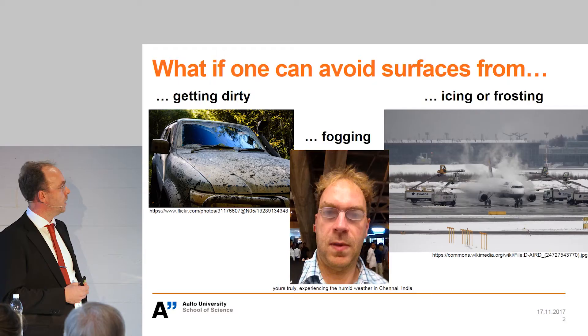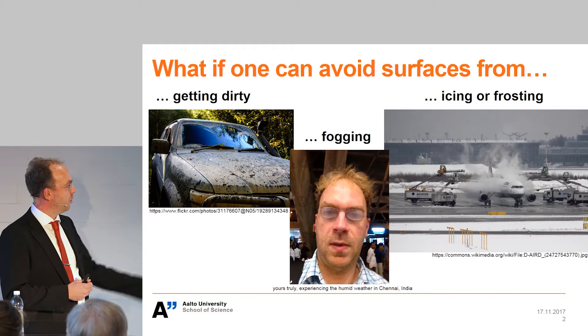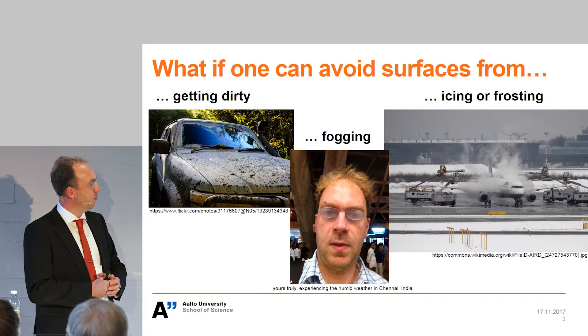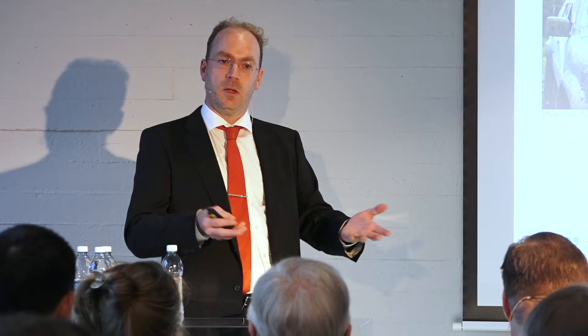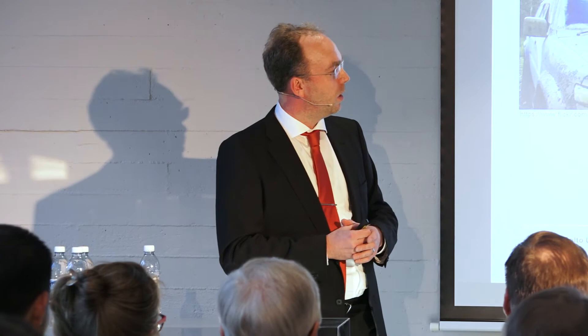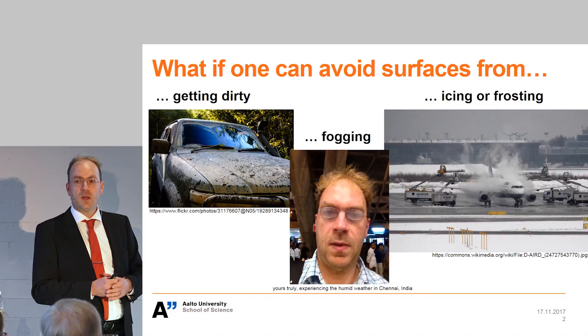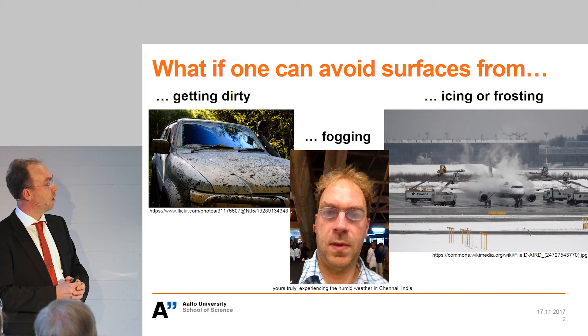Also fogging — the condensation of droplets on surfaces — is a problem. You may recognize this: I was at the Indian Institute of Technology in Chennai, Madras, and when I stepped outside of the airport, the air is very humid there and my glasses fogged up completely. You experience this also in your car when it gets colder. And soon, when winter arrives, icing and frosting become a problem. When you take an airplane, you want to travel safely and don't want ice to deposit on the wings.